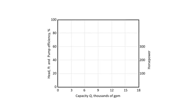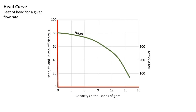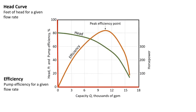Here we have a pump characteristic curve showing head in feet and pump efficiency versus the capacity in thousands of gallons per minute. Looking at the pump curve for a particular impeller, the head curve shows feet of head for a given flow rate. We also need to plot the efficiency curve for that impeller, which shows pump efficiency for a given flow rate. You can see that we have the peak efficiency point right at the top of the efficiency curve.